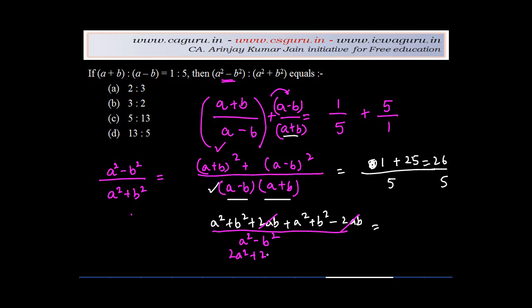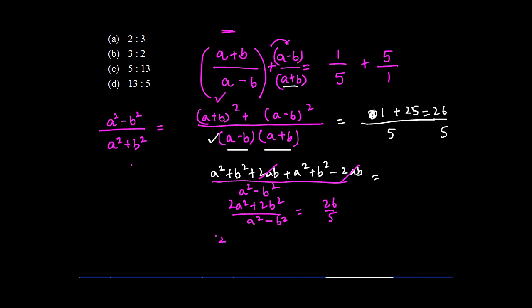2a²+2b² upon a²-b² equals 26/5. If I take 2 common, I'm left with (a²+b²)/(a²-b²) equals 26/5.